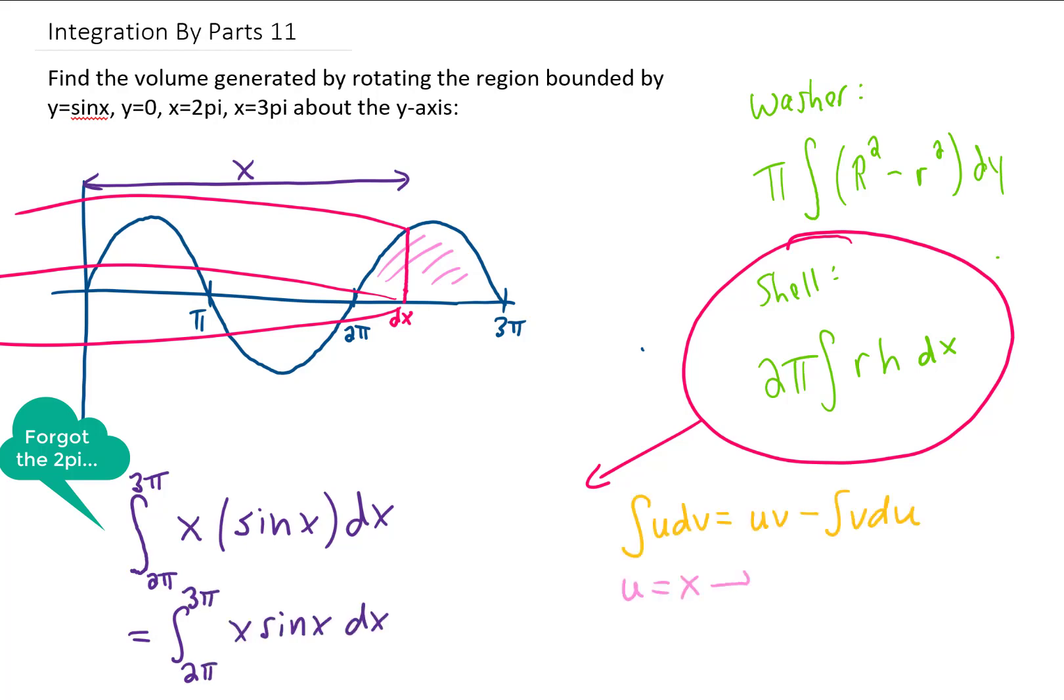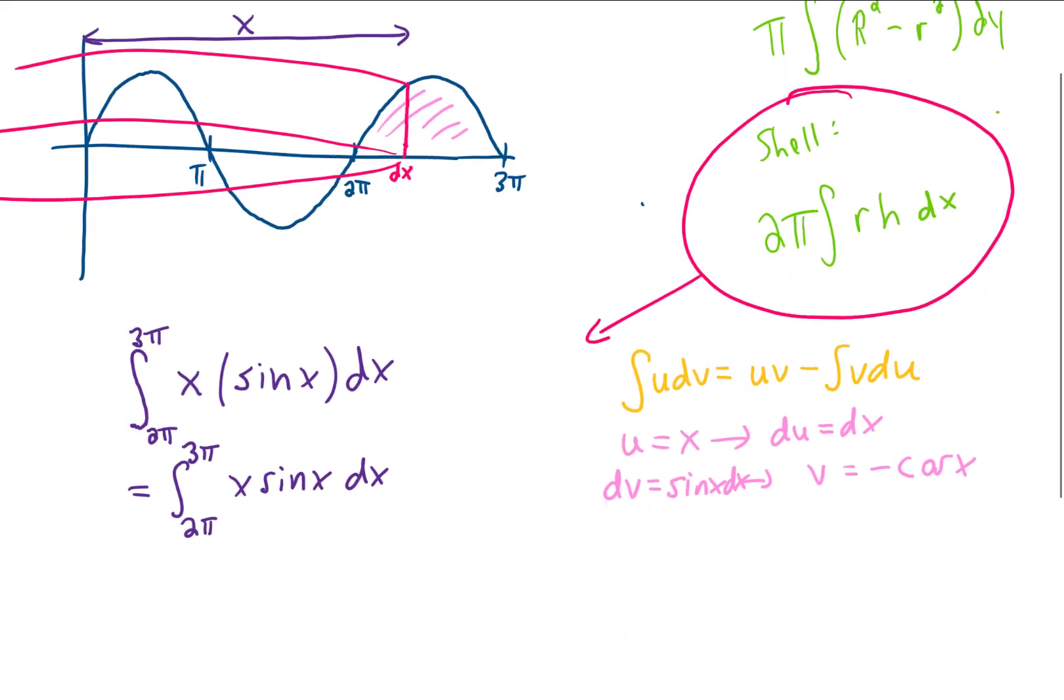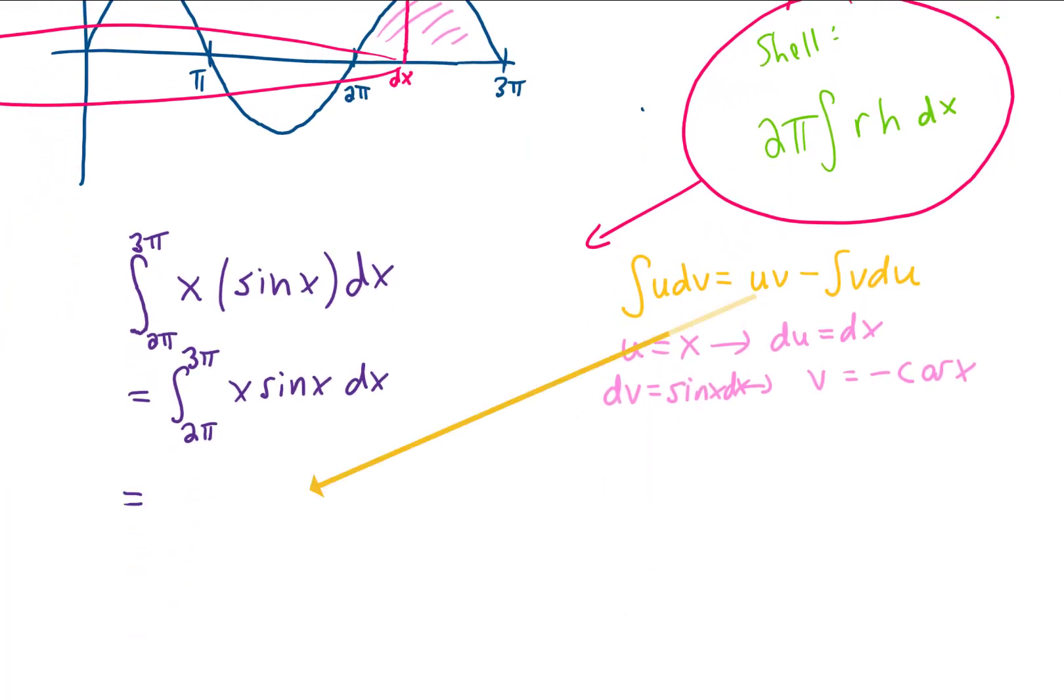And we've done something like this before. We can choose u equals x, and we can choose dv equals sine of x. Integrating to get v gives us negative cosine of x. We can now use our integration by parts formula to rewrite this integral.